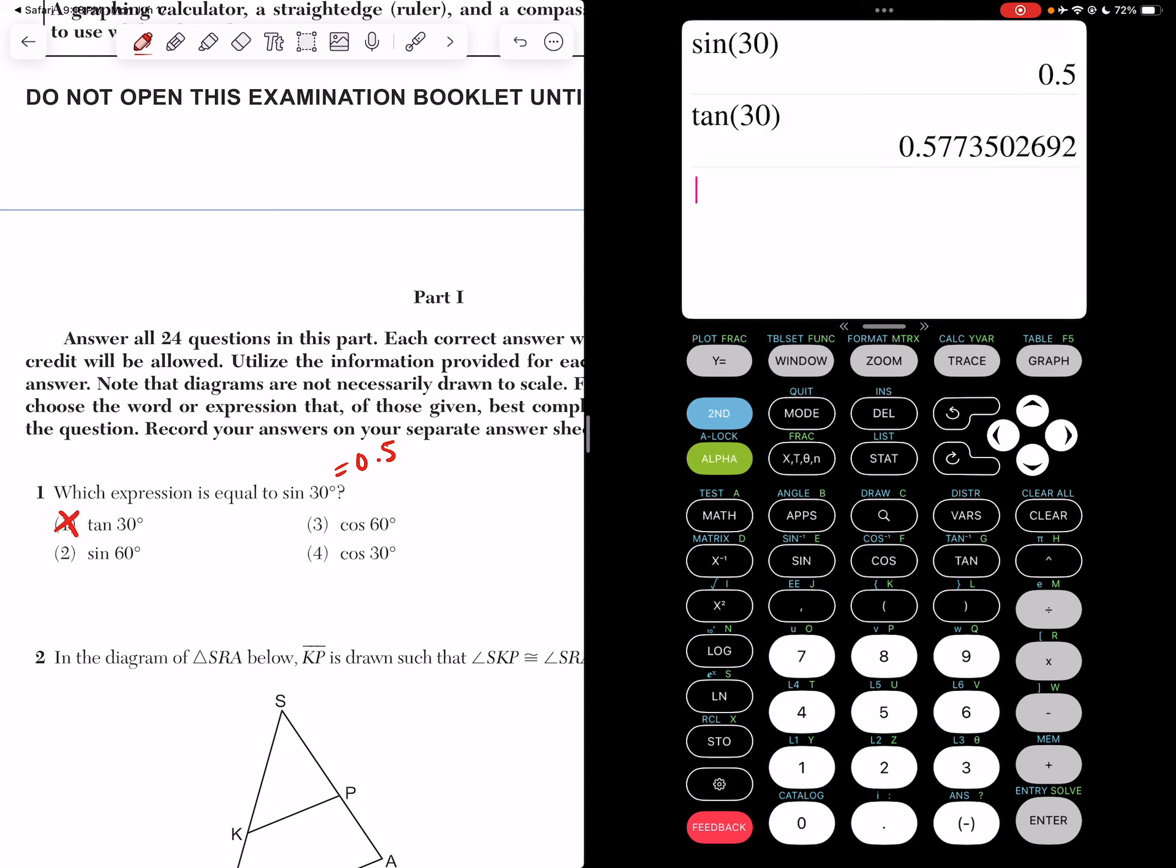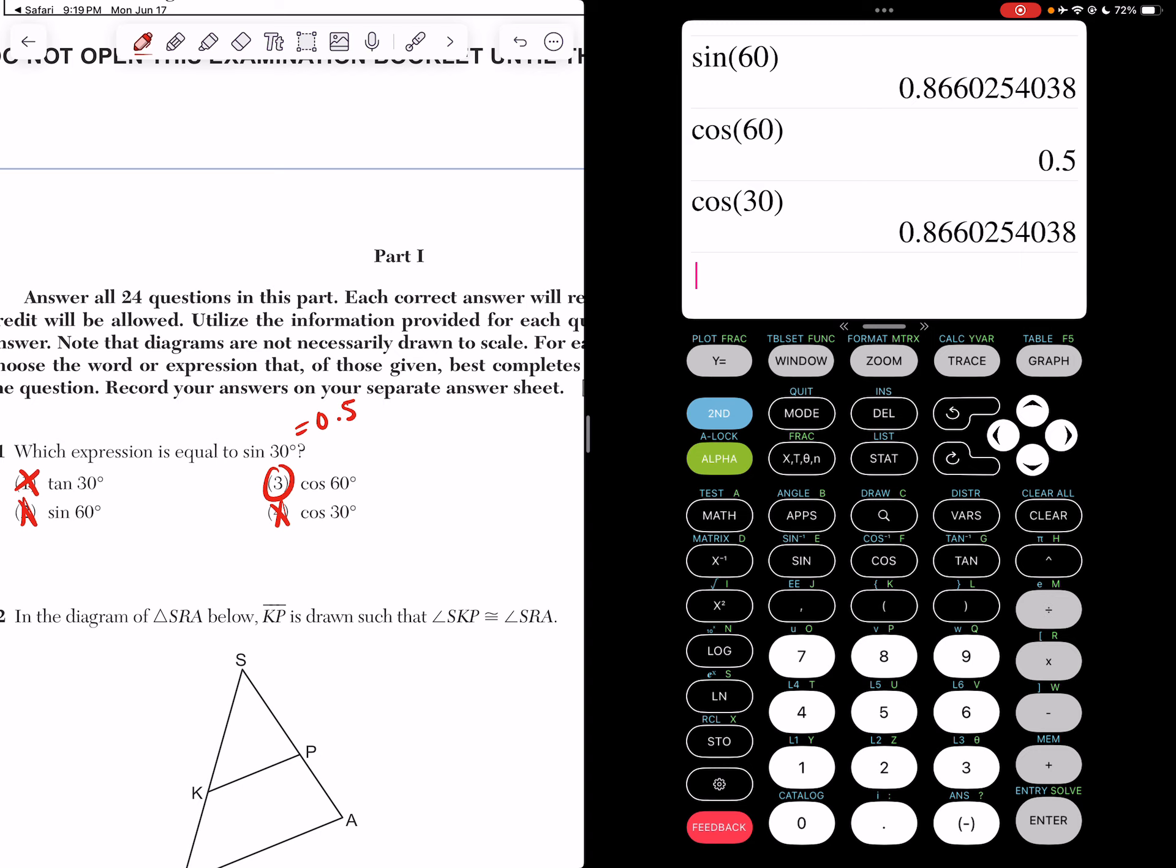If I type in the cosine of 60, I do get 0.5. So it's going to be choice three. And if I type in the cosine of 30, that doesn't give me 0.5. So for this one, it has to be the cosine of 60.